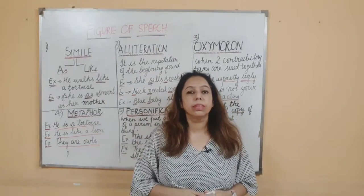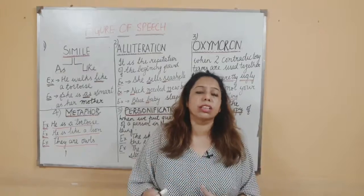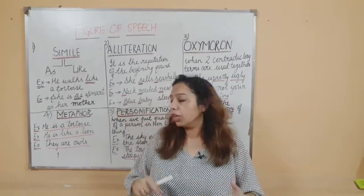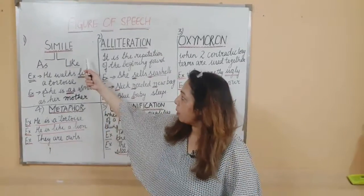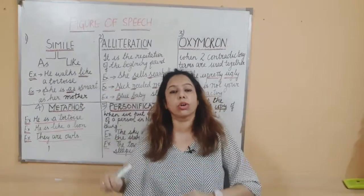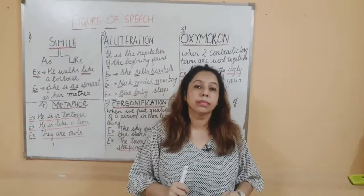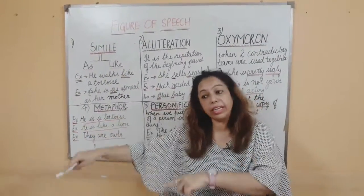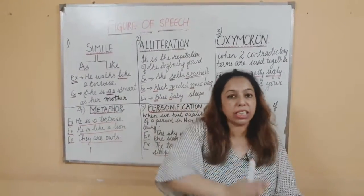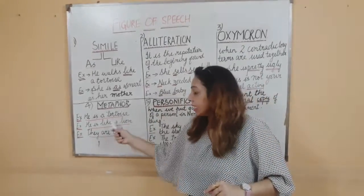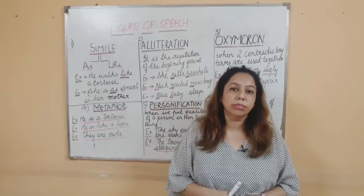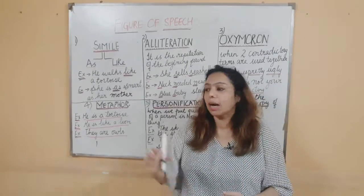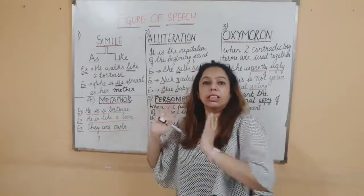Moving on, the next figure of speech is metaphor. Some students get confused between personification and metaphor. In simile, I said 'he walks like a tortoise' — using 'like'. But in metaphor, to emphasize more strongly, instead I say 'he is a lion' — I have directly made him that thing. So this is metaphor.